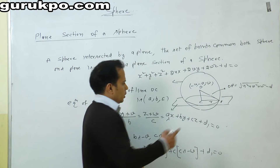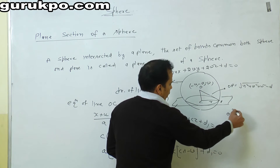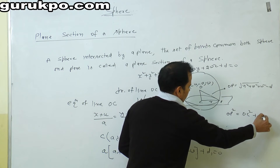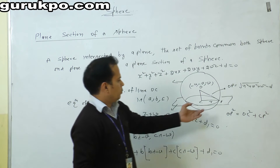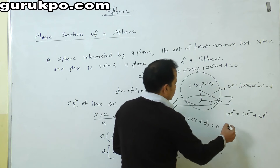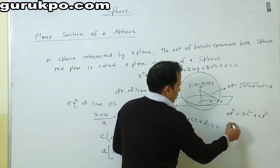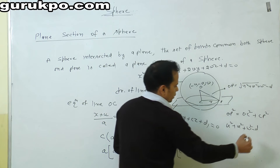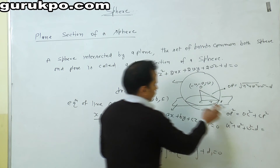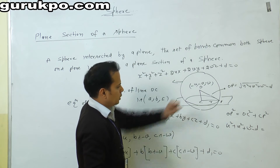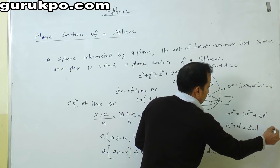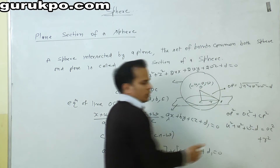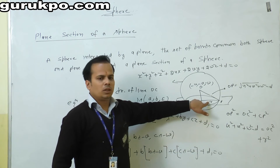We know the Pythagoras theorem: OP² = OC² + CP². Here OP is the radius of the sphere, equal to √(u² + v² + w² − d). OC is found using the distance formula between the two points. CP gives us R, the radius of the circle. Using this formula we find the radius of the circle.